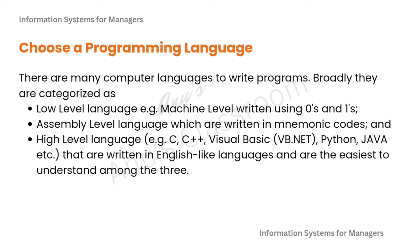Depending on whether you turn switches off or on, transistors work in different ways — that is the electronics part, which as managers we don't need to know. That is how the computer ultimately works. But what we will be writing uses human-readable, English-like words, symbols, and statements. The next type is assembly level language, written in mnemonic codes like ADD, LOOP, GOTO — small words rather than zeros and ones. Then comes high-level language.